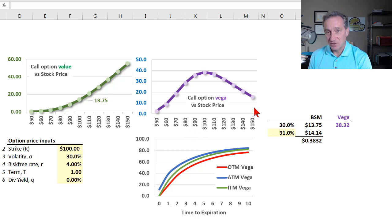Option vega tells us how much to expect the option price to change if the volatility of the option changes, so it's an important Greek. It's a first partial derivative, so it's a sibling to Delta.